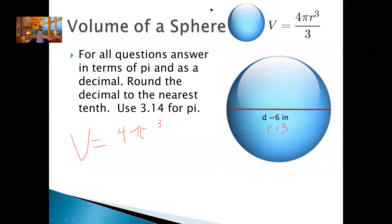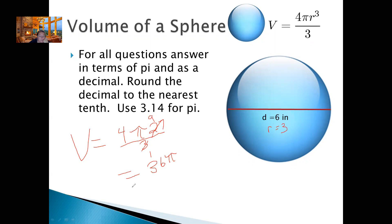So 3 cubed: 3 times 3 is 9, times another 3 is 27, divided by 3. I can simplify this one because 27 divided by 3 is 9, and 3 divided by 3 is 1. So basically it's going to be 4 times 9, which is 36 pi. And if I want to find the actual rounded number to the nearest tenth, I'm going to do 36 times 3.14. What is 36 times 3.14? 113.04. So we'll just say 113. And we got inches here, so it's going to be inches cubed.